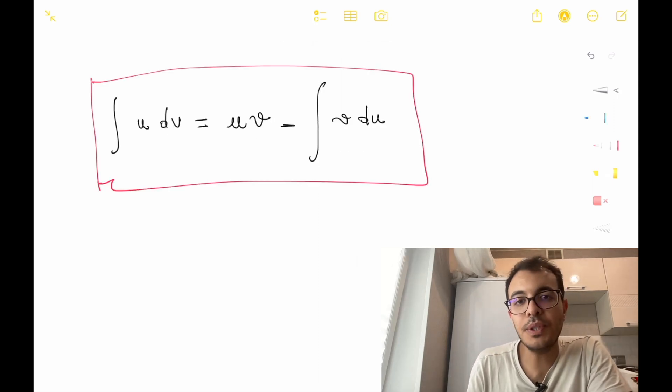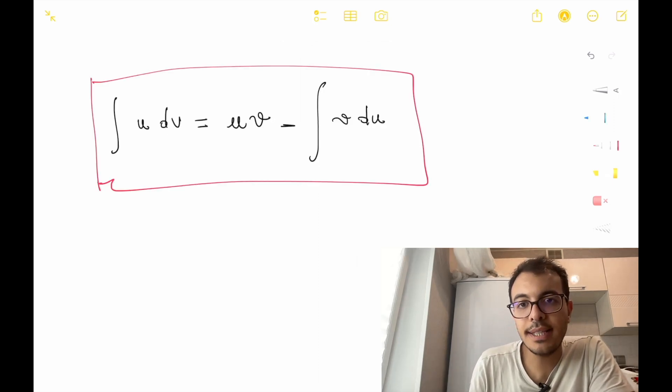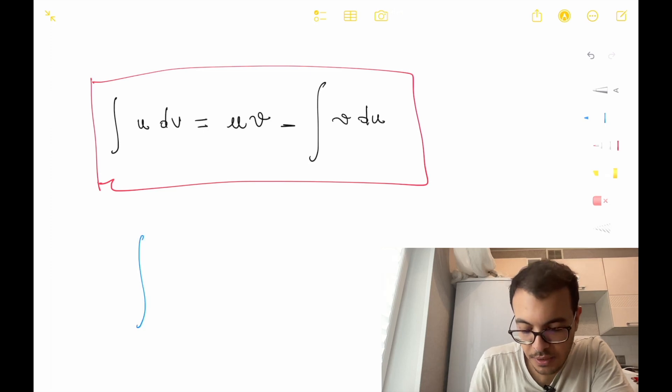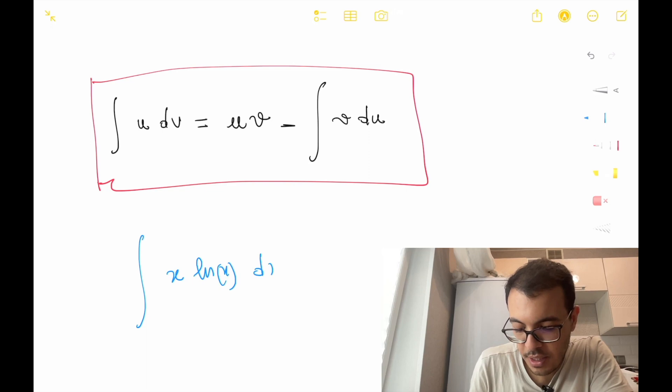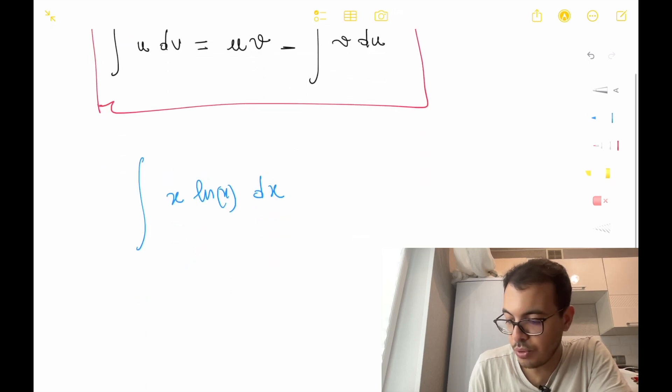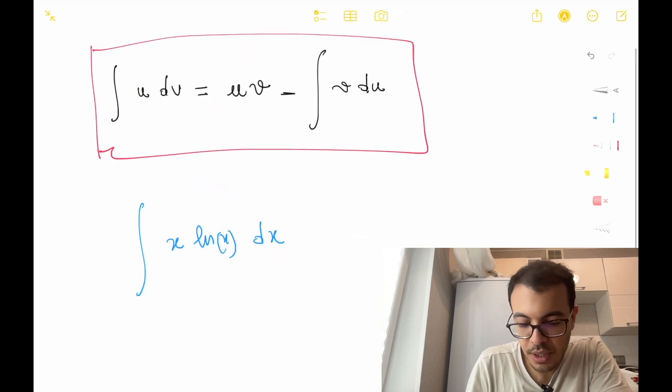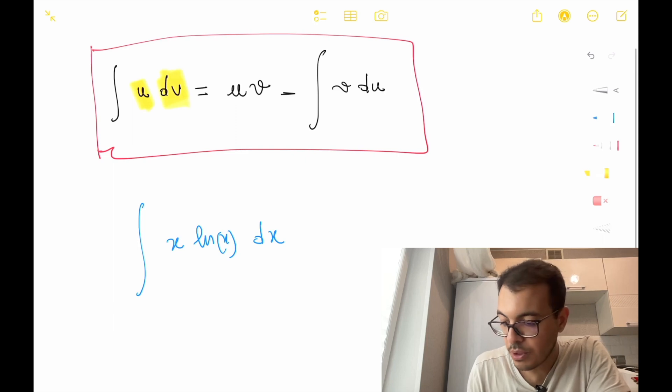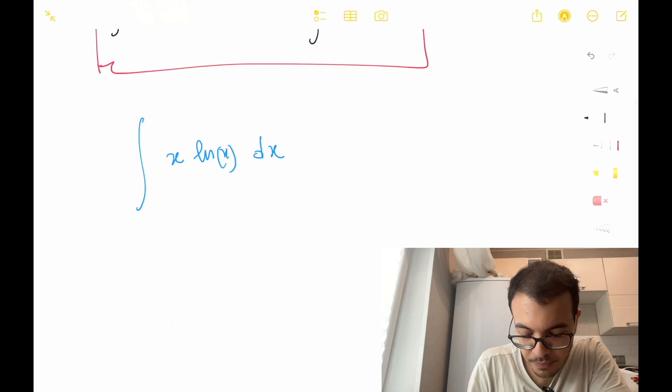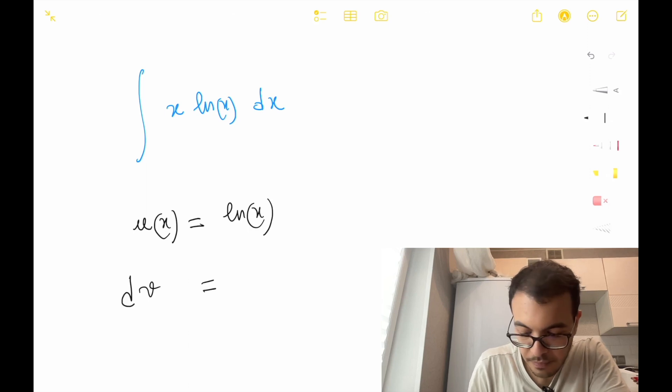Let's take an example. Consider the integral of x times ln(x) dx. We have to choose the two functions u and dv. For example, let's choose u equals ln(x) and dv equals x dx.